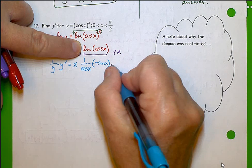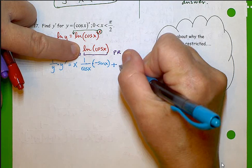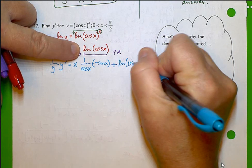Plus, we'll finish the product rule. The second term, natural log of cosine of x times the derivative of the first, which is just 1.